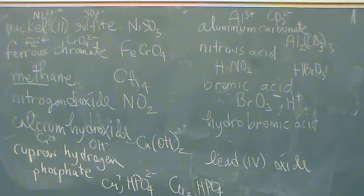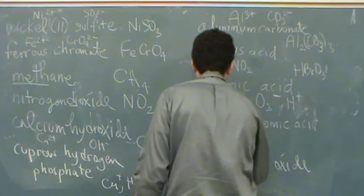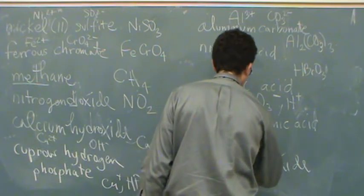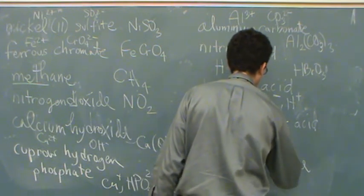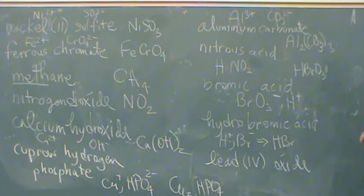Hydrobromic acid. The hydro in front, that just tells you it's H and Br, and that's all there is. So if you have an H+ and a Br-, they just go together to form HBr. So bromic acid and hydrobromic acid look a lot different.